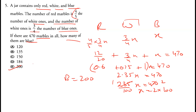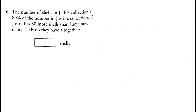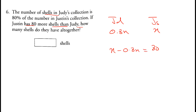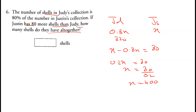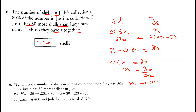Question six: Judy's collection is 80% of Justin's. If Justin has x, Judy has 0.8x. Justin has 80 more shells than Judy, so x - 0.8x = 80, giving 0.2x = 80, so x = 400. Together they have 400 + 320 = 720 shells total.